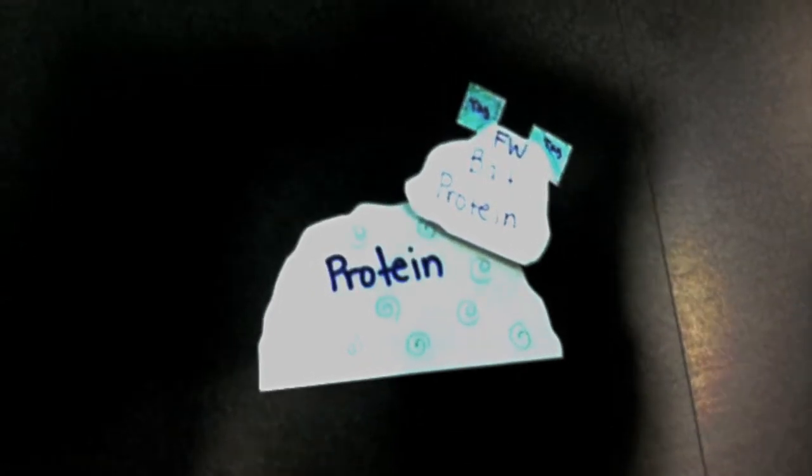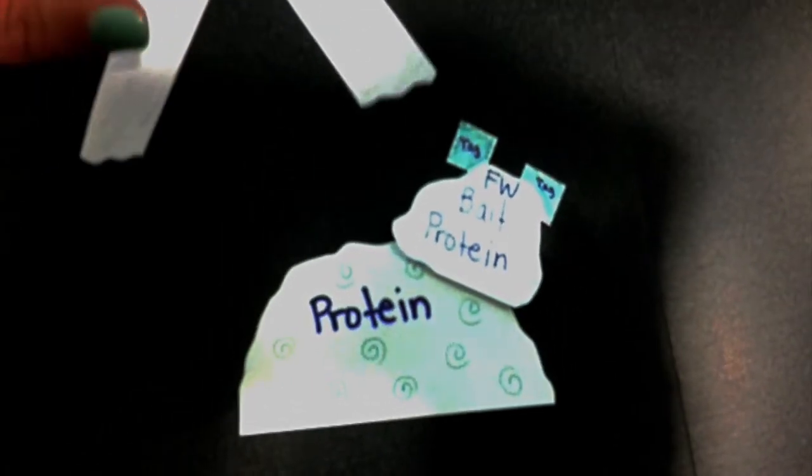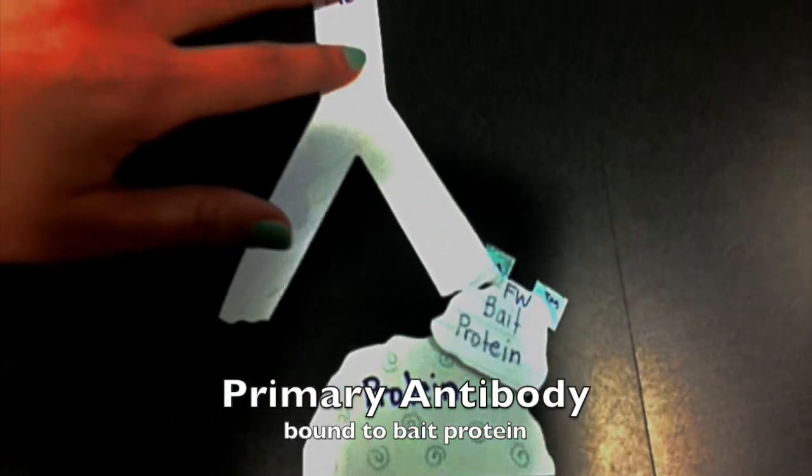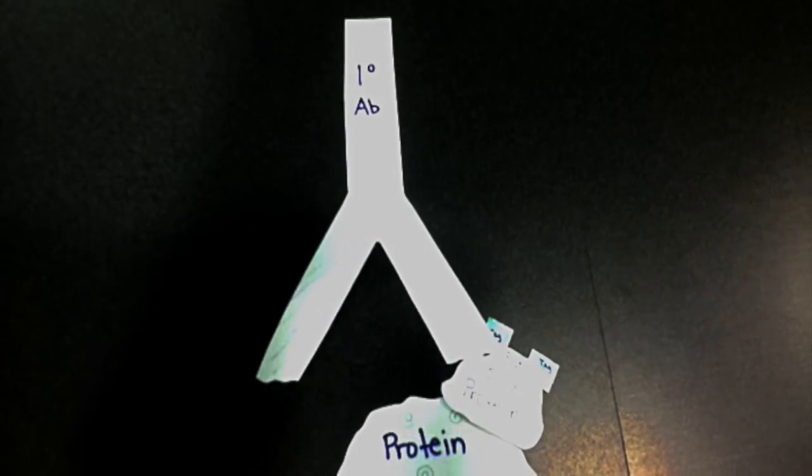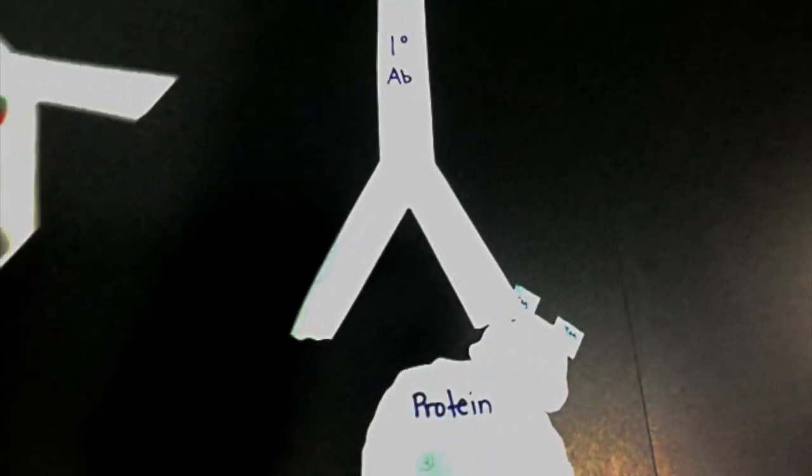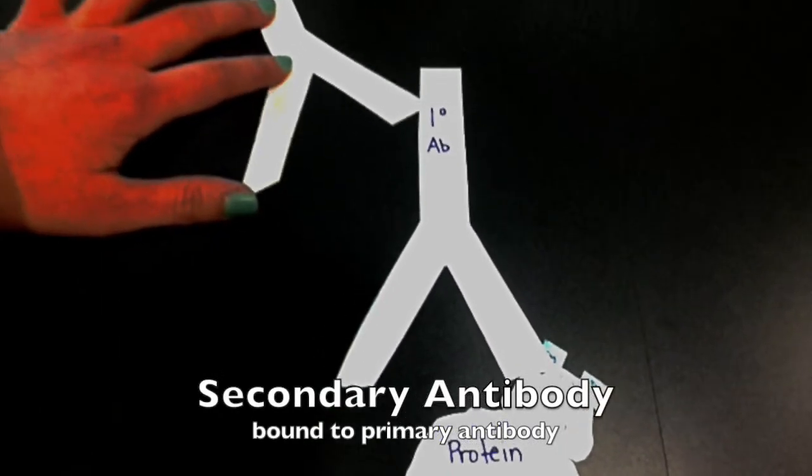You can then add the primary antibody, this time directed against the bait protein. And just like in western blots, you can then add a secondary antibody to amplify the signal.